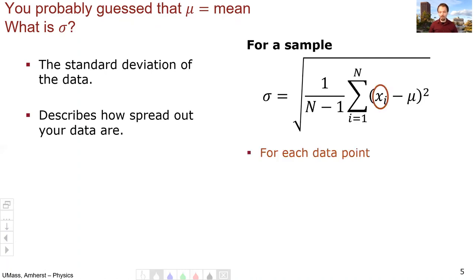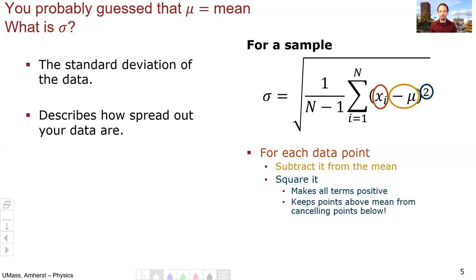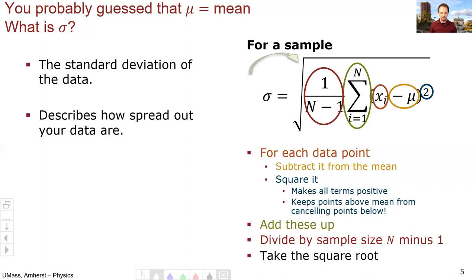So for each data point, xi, what you do is you subtract it from the mean, so you have to calculate the mean first, and then you square it. Squaring it serves the important function. It makes all the terms positive. This means that data points that happen to be above the mean, we can't cancel out points that are below the mean. All the effects will add up as we go along. And then we take all these answers and we add them all up, divide by the sample size minus one, and then take the square root.